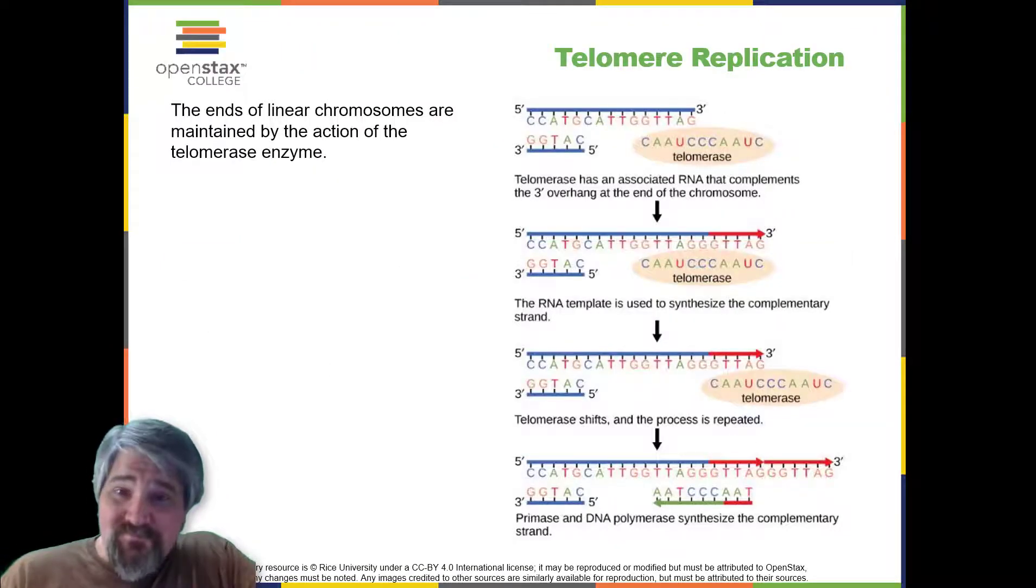Telomere replication. Because eukaryotic chromosomes are linear, DNA replication comes to the end of a line in eukaryotic chromosomes. As you have learned, the DNA polymerase enzyme can add nucleotides in only one direction. In the leading strand, synthesis continues until the end of the chromosome is reached. However, on the lagging strand, there is no place for a primer to be made for the DNA fragment to be copied at the end of the chromosome. This presents a problem for the cell because the ends remain unpaired, and over time these ends get progressively shorter as cells continue to divide.